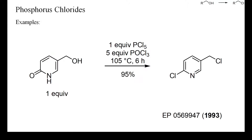In this example, both a pyridone and a primary alcohol were deoxychlorinated. A refluxing solution of phosphorus pentachloride in phosphorus oxychloride was used as reagent, and a high yield of the dichloride was obtained after six hours. Deoxychlorinations of pyridones and related compounds are not always easy to accomplish with reagents such as phosgene or thionyl chloride, but proceed particularly smoothly with phosphorus oxychloride.